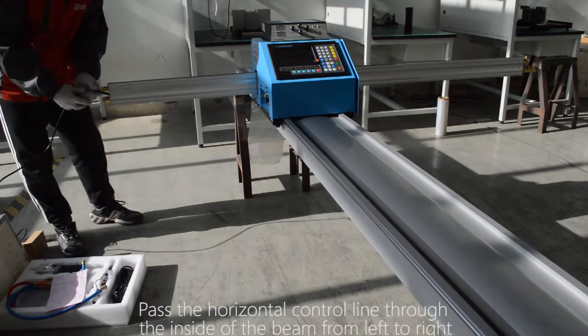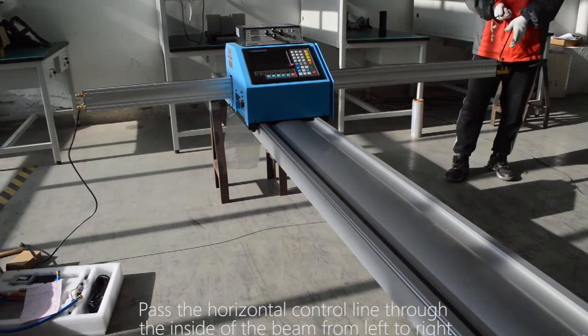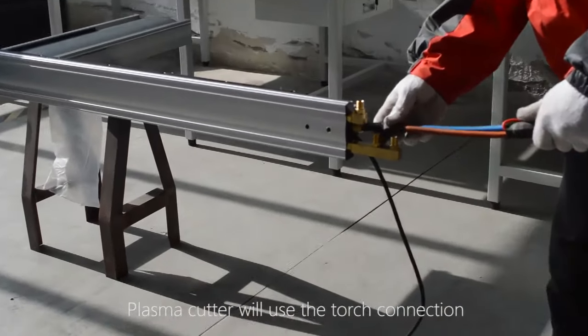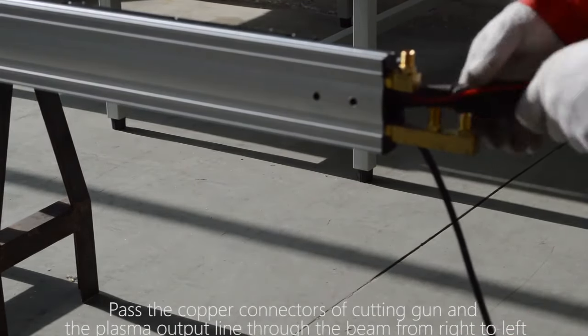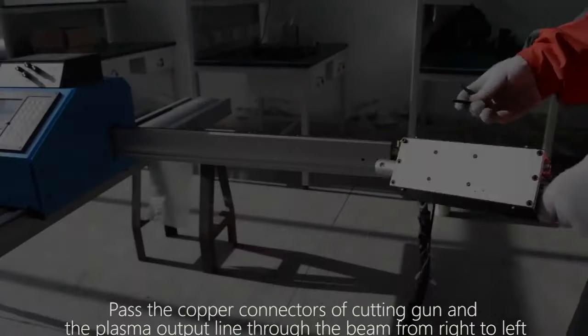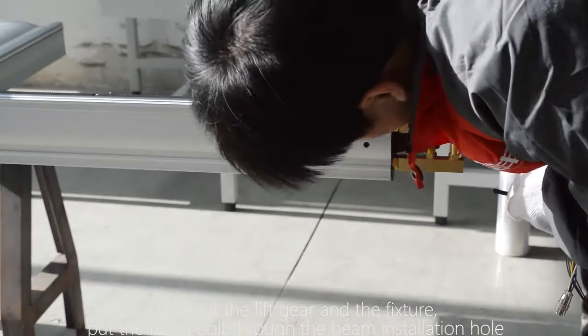Pass the horizontal control line through the inside of the beam from left to right. Plasma cutter will use the torch connection. Pass the copper connectors of cutting gun and the plasma output line through the beam from right to left. Take out the lift gear and the fixture.